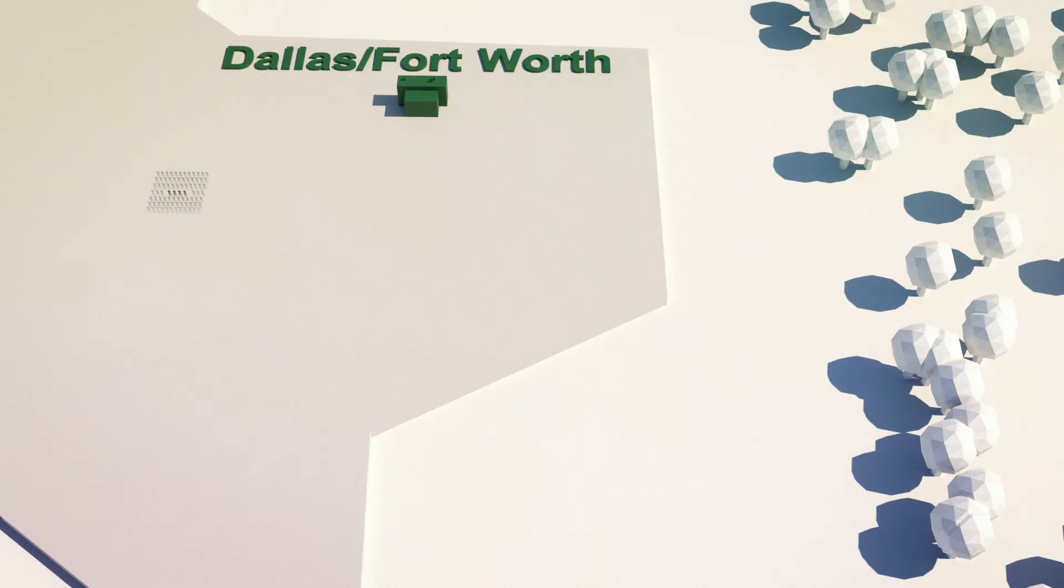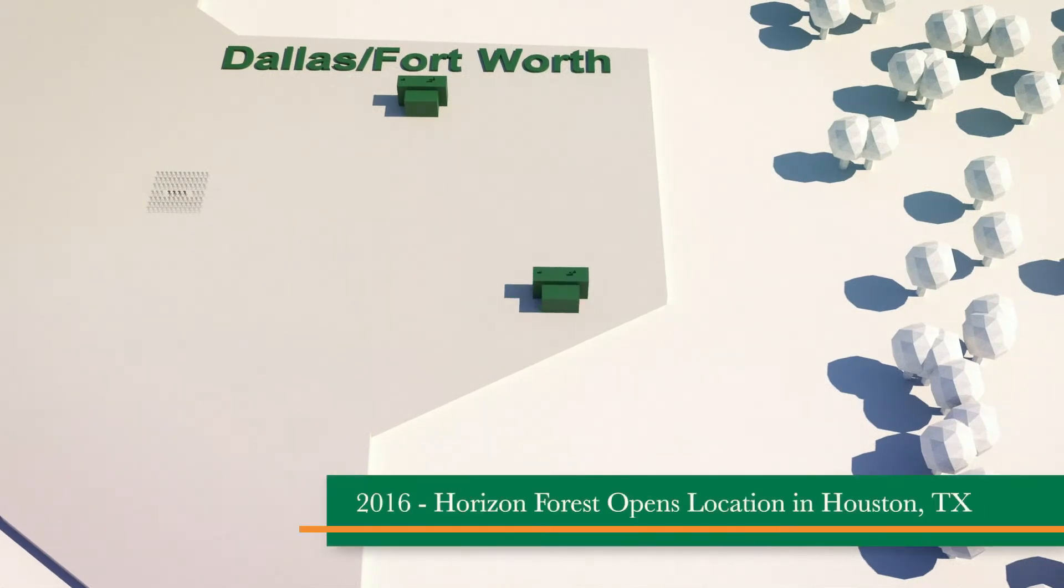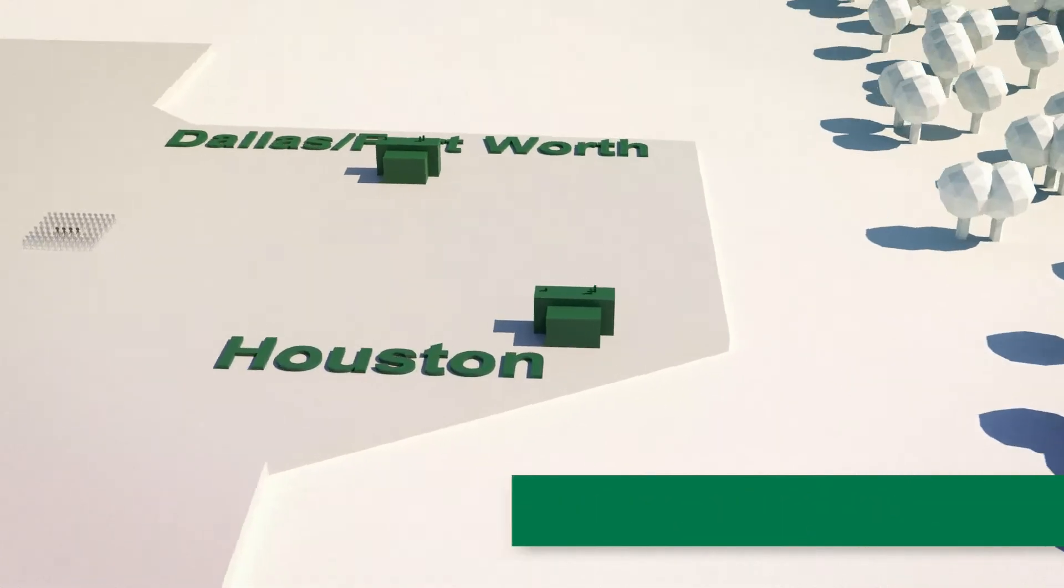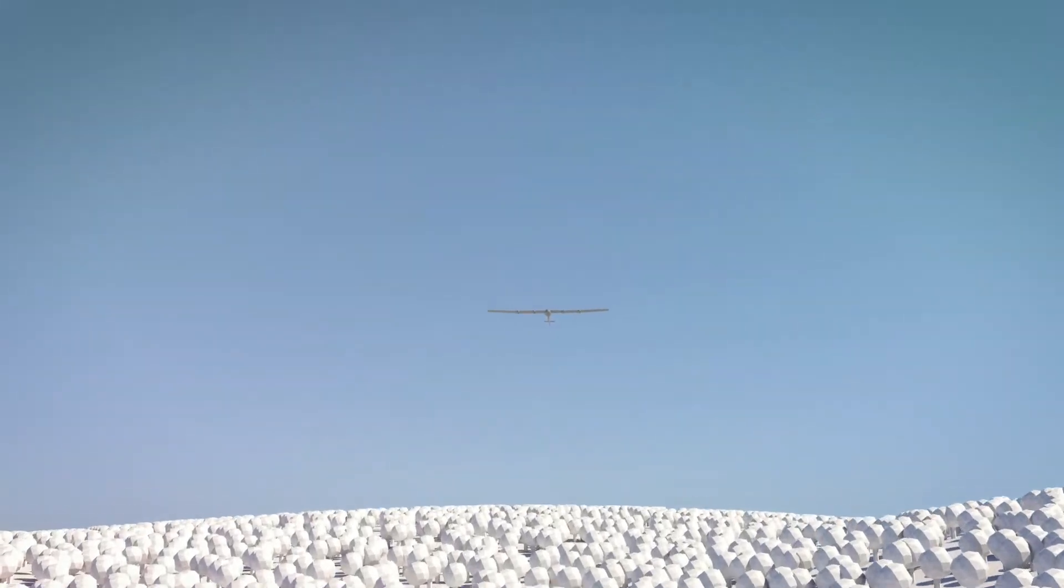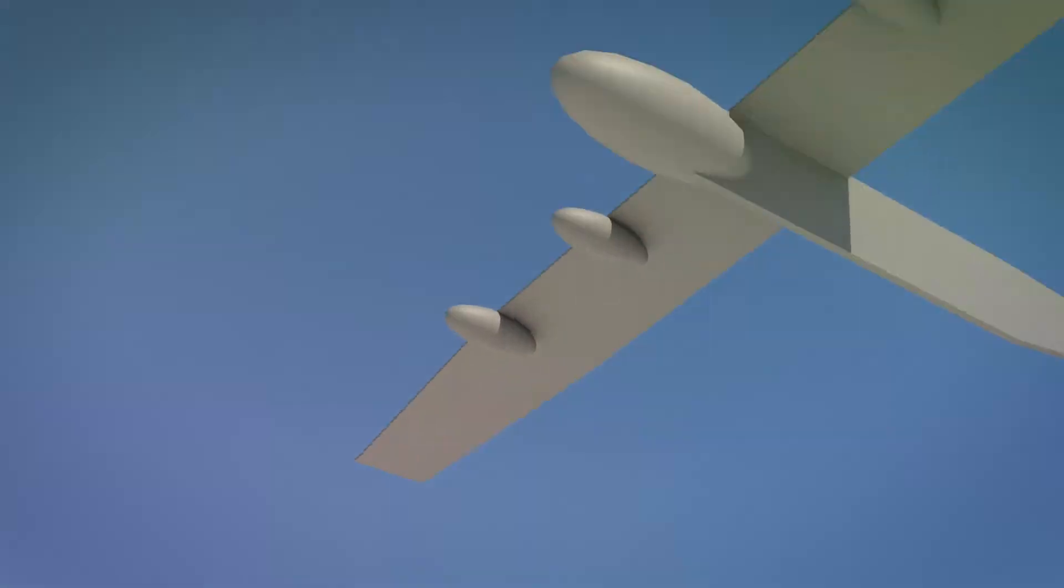A year later, in 2016, Horizon continues to grow and opens a new location in Houston, Texas. Meanwhile, the Solar Impulse 2 completes the first circumnavigation of the planet by an airplane powered only by the sun.